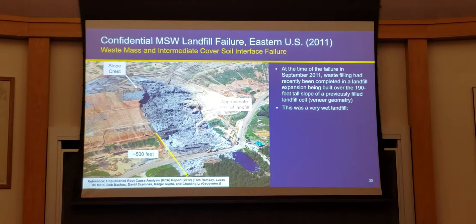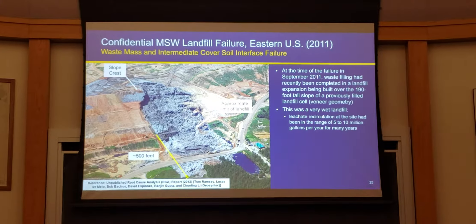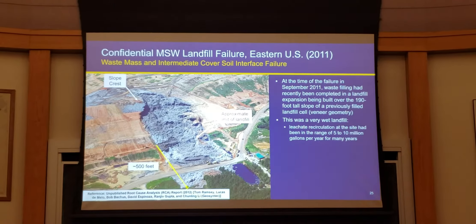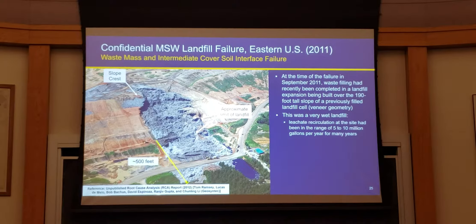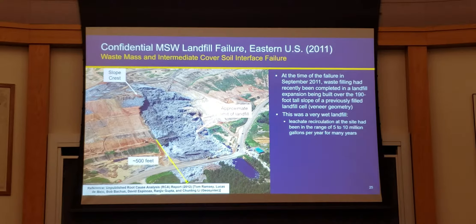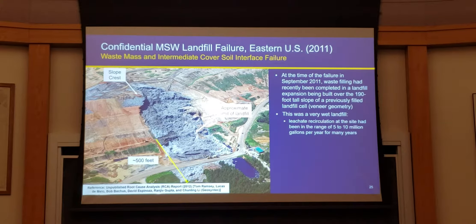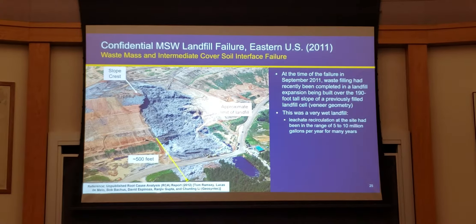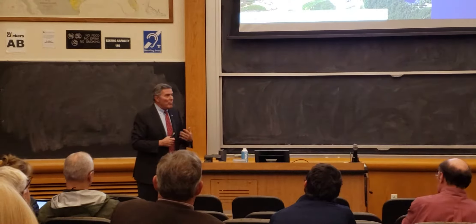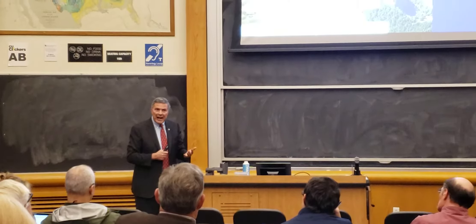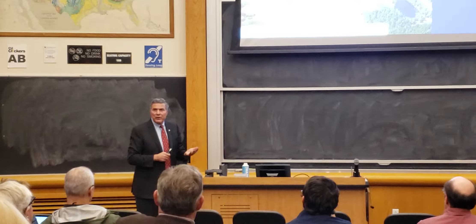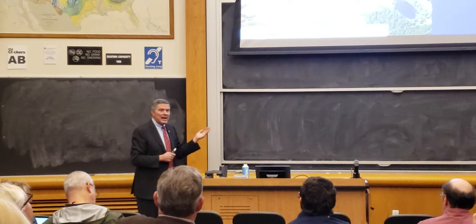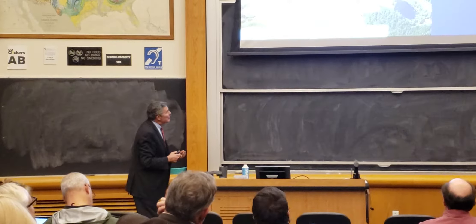This landfill was very wet, so they recirculated leachate. Leachate recirculation is a process where, instead of pumping leachate to a wastewater treatment plant, you take it to the top and reinject it into the landfill. Why? Two reasons: reinjection stimulates microbial decomposition, so you generate gas more quickly and can capture it; and you have an avoided treatment cost since this wastewater is quite nasty. There are significant savings involved.